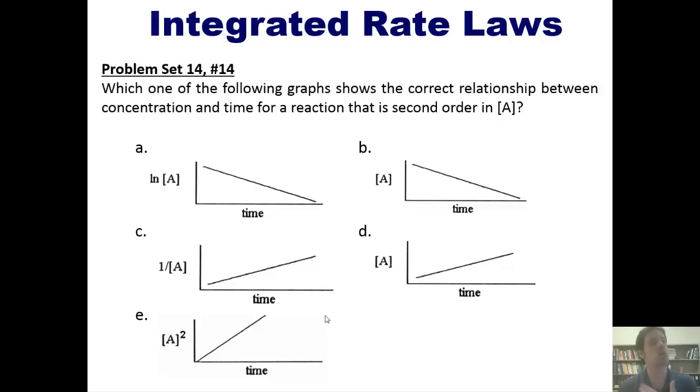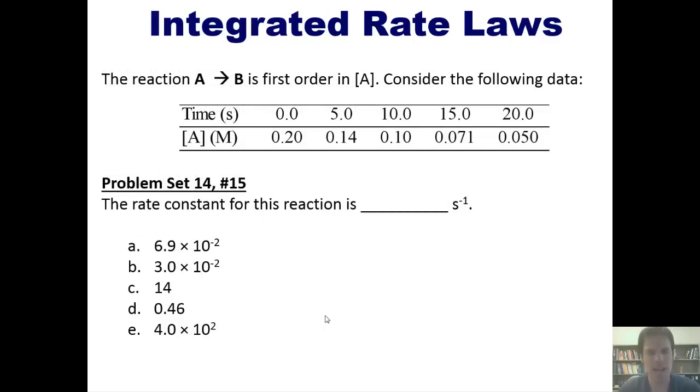That takes us to another question. The reaction A going to B is first order in A. Considering the following data, what is the rate constant for this reaction? You can pause the video now, see if you can figure it out on your own. You can then click this link to watch me solve it on the whiteboard.